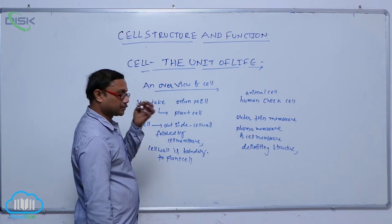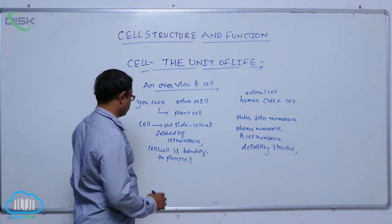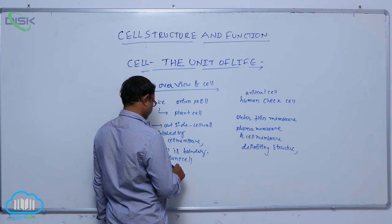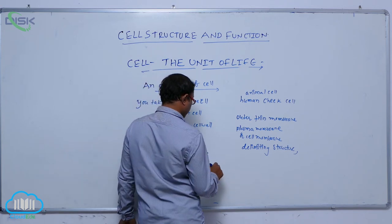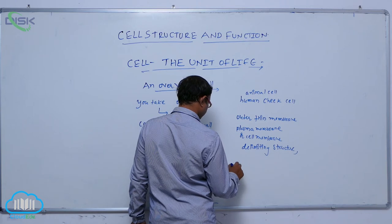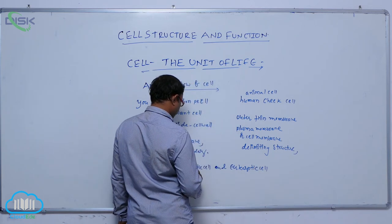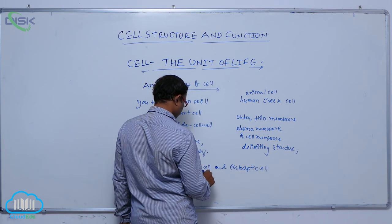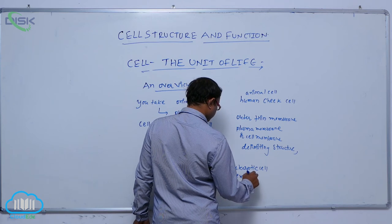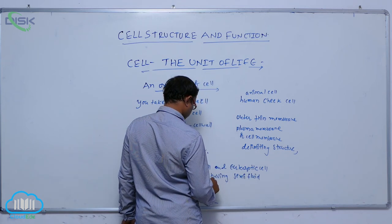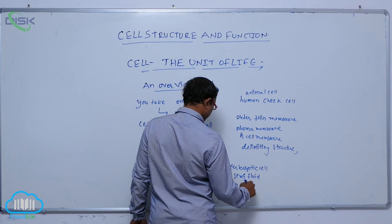In both prokaryotic and eukaryotic cells, there is a semi-fluid matrix present inside, which is known as the cytoplasm.